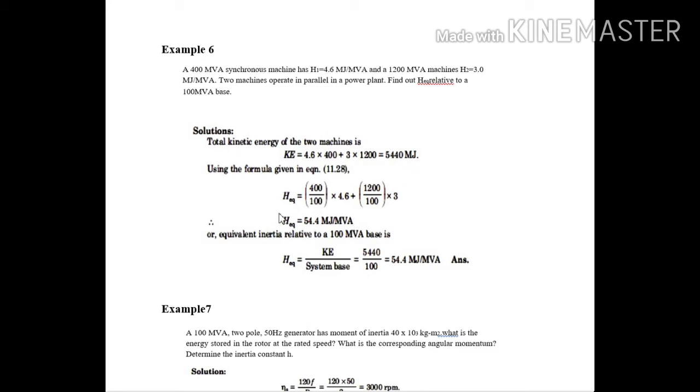Then H equivalent. The formula we are knowing as H1 of the one system, it's H machine into G machine by G system. The same formula it is used. This is for H1. This is for H2. Addition of this gives you H equivalent, which is 54.4.